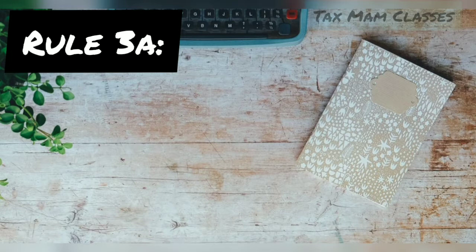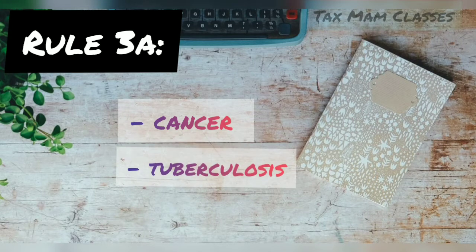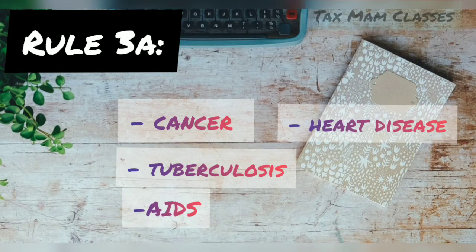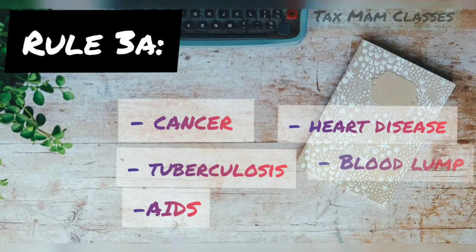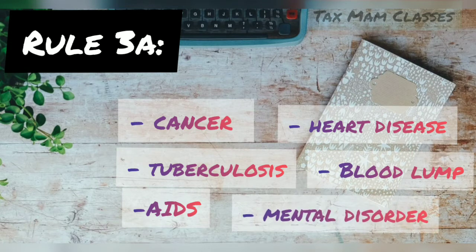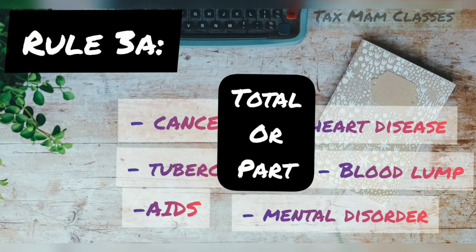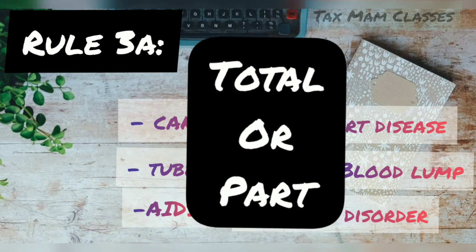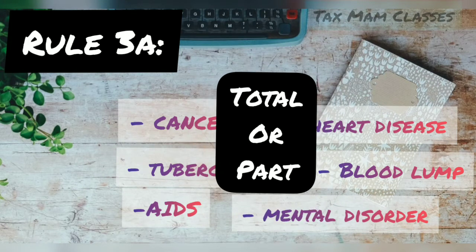A few examples of diseases covered are cancer, tuberculosis, AIDS, and diseases related to the heart, blood, lungs, glands, and mental disorders. So if a person is taking any medical treatment and incurring expenditure, the total amount or part of the expenditure will be allowed as deduction.